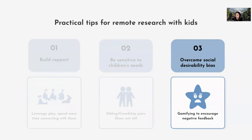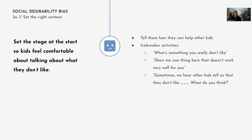The last tip is overcoming social desirability bias. This is common even for adults — people feel they have to say the right thing and feel bad about giving negative feedback. At the start of the session, set the stage to let kids feel open and comfortable talking about things they don't like. Tell kids the goal of the research session and why you're talking to them. Let them know that when they give honest feedback, it helps make the product better for other kids — this often motivates them to be more open about providing negative feedback.